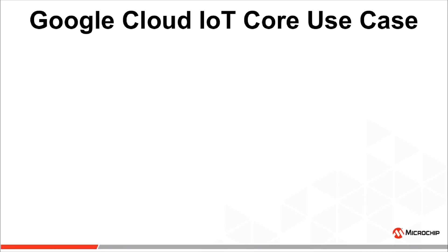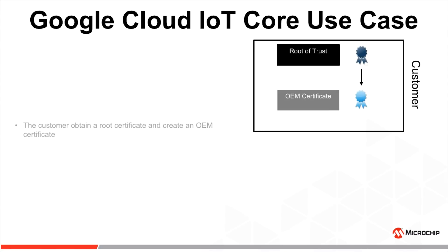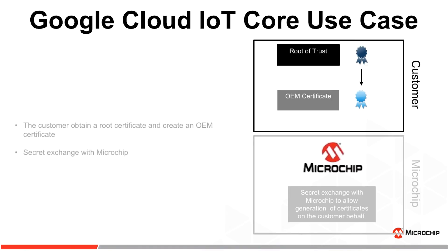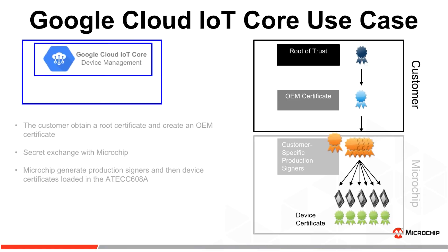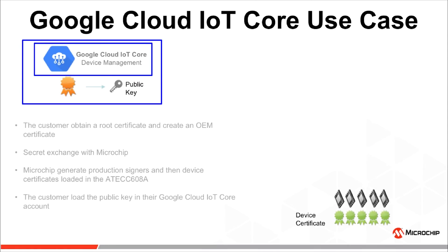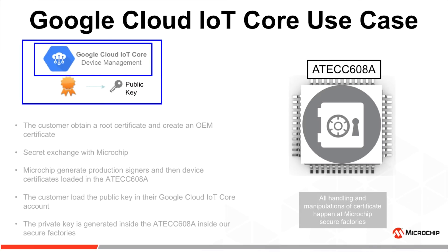Let's look at the details of the Google IoT Core use case. The higher-level certificates are issued by the customer at their site. The customers obtain a root certificate and create an OEM certificate. Then a secret exchange process is established between the customer and Microchip to allow the generation of certificates. Microchip generates production signers and device-level certificates that are loaded into the ATECC608A. The public key is then loaded into the device management of Google IoT Core. The private key is generated inside the ATECC608A within Microchip's secure factories, and all handling and manipulation of certificates happen within those same secure factories.